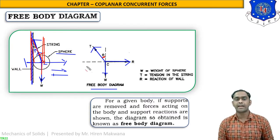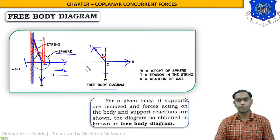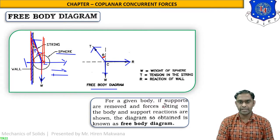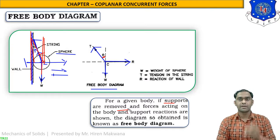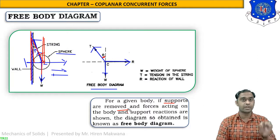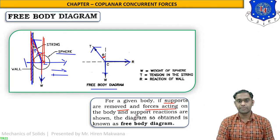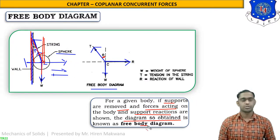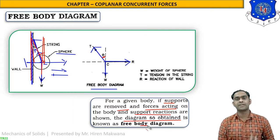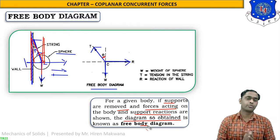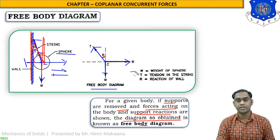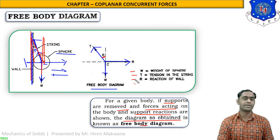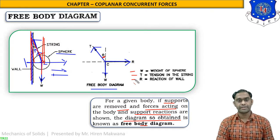The free body diagram is now completed. If you want to define it: for a given body, if supports are removed — the wall is removed, the string is removed — and only forces acting on the body and support reactions are drawn, the diagram so obtained is known as a free body diagram. Here W is the weight of the sphere, T is the tension in the string, and R is the reaction of the wall.